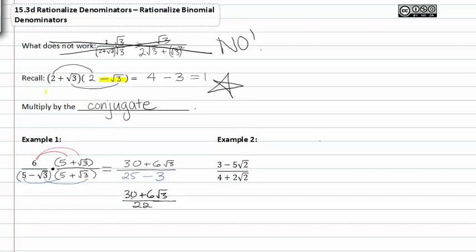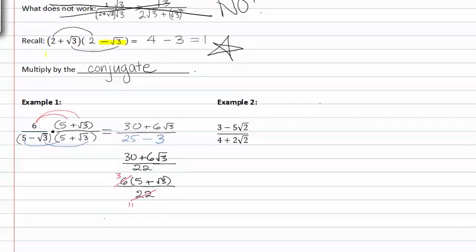There's a common factor of six in the numerator, so I get five plus root three, and in the denominator twenty-two. A common factor of two divides out, and I get eleven and three. So my final answer is three times the quantity five plus root three, all over eleven.